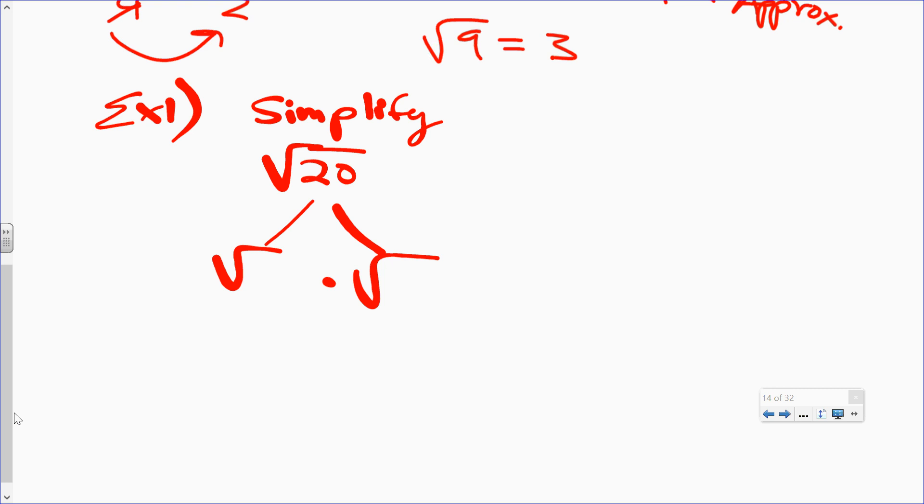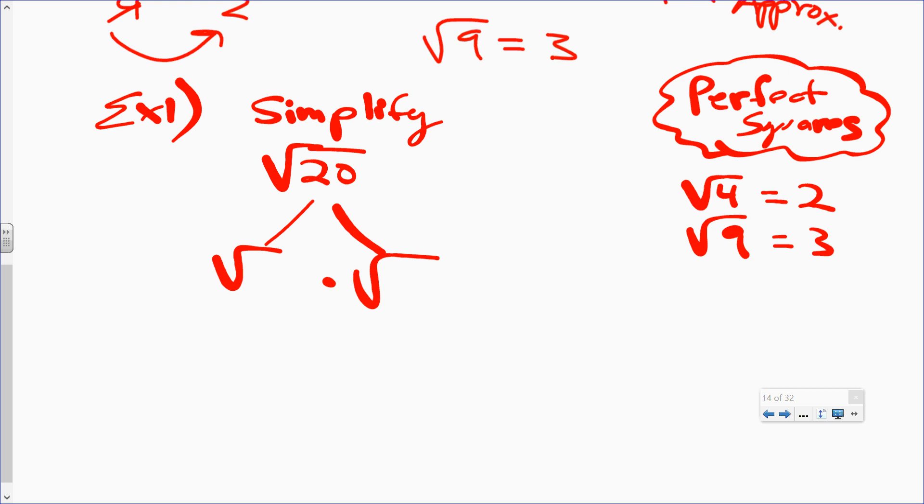Now when I say perfect squares, let's think about perfect squares here. Perfect squares are like the numbers 4. The square root of 4, that becomes 2. The square root of 9 becomes 3. The square root of 16 becomes 4. The square root of 25 becomes 5. It goes on to infinity. I'm going to break square root of 20 down into two factors. I've got to make sure one of the factors comes from this list right here, the perfect squares list.